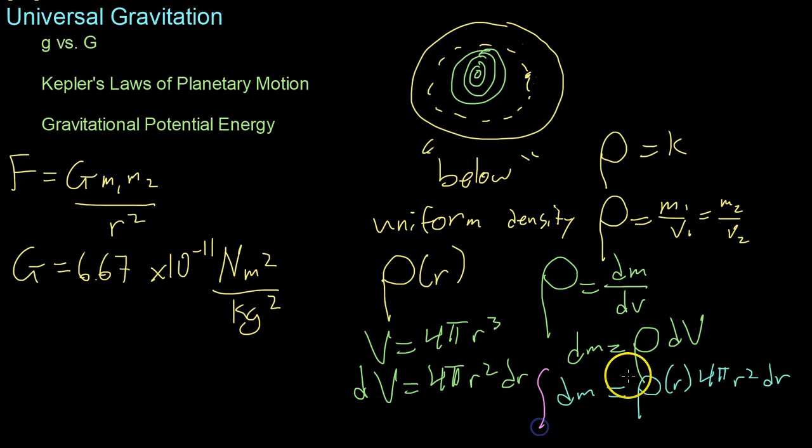From here, all you have to do is integrate both sides from 0 to m and from 0 to whatever radius you're at. We'll call that r naught. And from here, you would simply integrate whatever this rho function was to find the total mass of the planet inside. And then from there, you could calculate the gravitational force inside of this imaginary sphere.